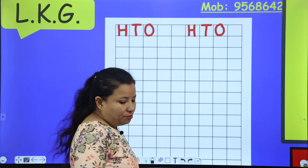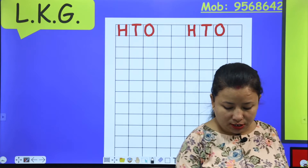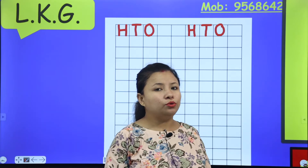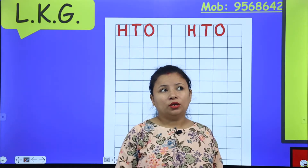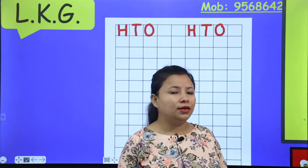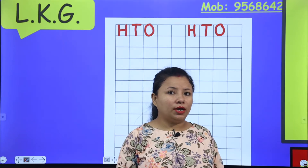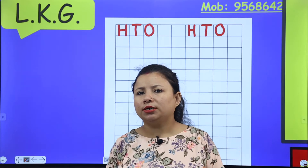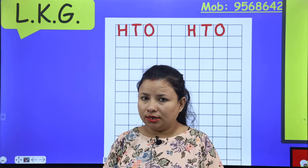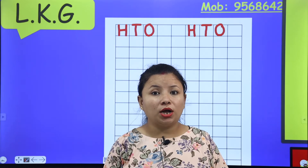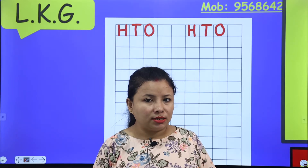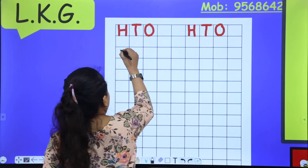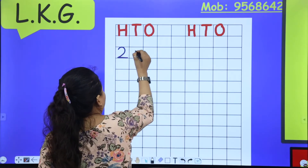I will start with my first number. My first number is 210. How do you write 210? Two hundred and ten — so that is 210.